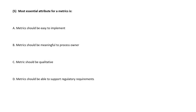Question 5. The most essential attribute for a metric is — correct answer is option B. It should be meaningful to the process owner.